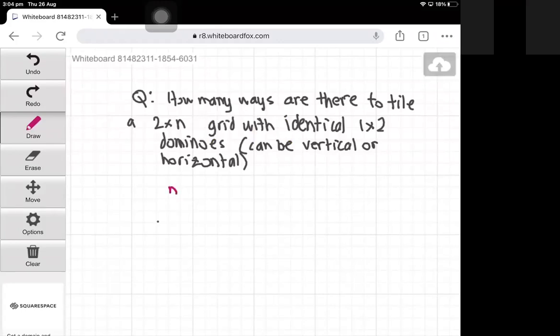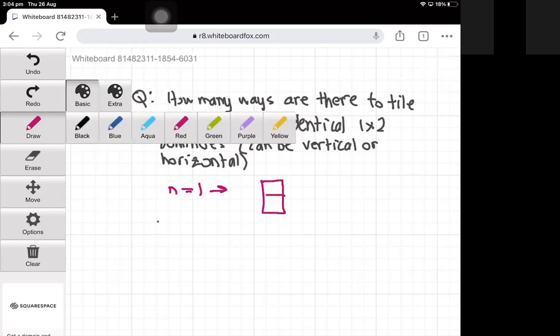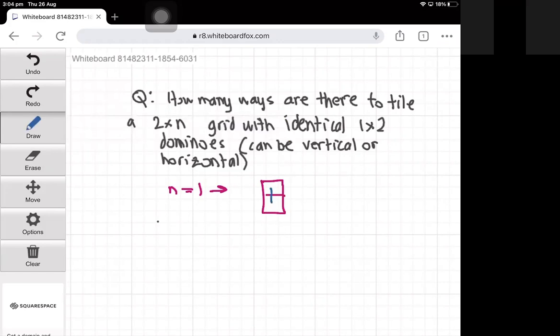So if we start with the simplest example of n equals 1, the grid will just be a 2×1 grid, and the only way to fill it with a domino is like this. So it's only one way to tile the 2×1 grid with a domino.